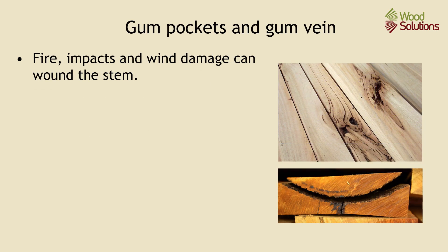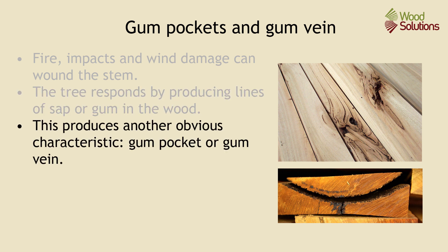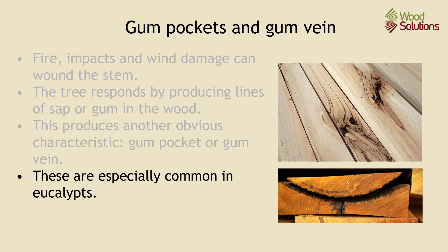Fire, impacts from falling branches and stems and wind damage can wound the stem of the growing tree. The tree responds to these wounds by producing lines of sap or gum in the wood. These produce another obvious characteristic in sawn board: gum pockets or gum veins. These are especially common in eucalypts.